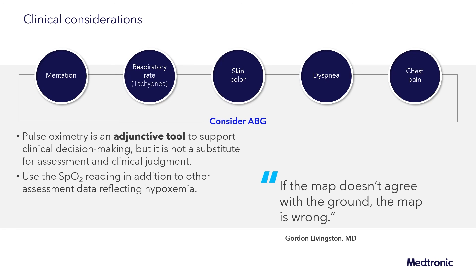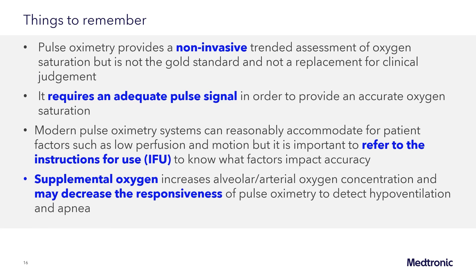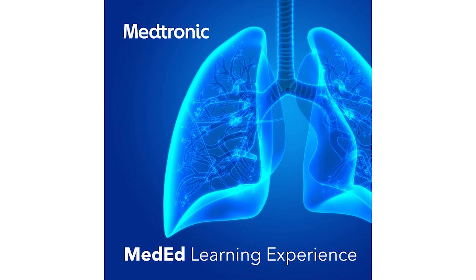As we conclude this session, I leave you with a few things to remember. Pulse oximetry provides a non-invasive trended assessment of oxygen saturation, but it's not the gold standard and is not a replacement for clinical judgment. It requires an adequate pulse signal in order to provide an accurate oxygen saturation, and when this pulse signal is compromised, it's important to troubleshoot as to why and consider an alternate location or perhaps an alternate sensor in an area where perfusion is more optimal. Modern pulse oximetry systems can reasonably accommodate for patient factors such as low perfusion and motion, but it's important to refer to the instructions for use to know what factors impact accuracy. Finally, supplemental oxygen increases alveolar and arterial oxygen concentration and may decrease the responsiveness of pulse oximetry to detect hypoxemia, hypoventilation, and apnea. Please tune in next week for a new segment from this series wherever you find your podcasts.